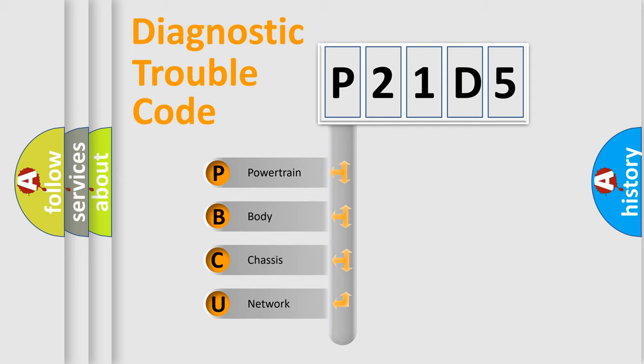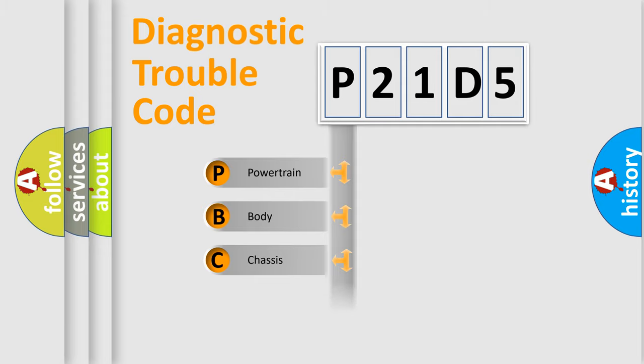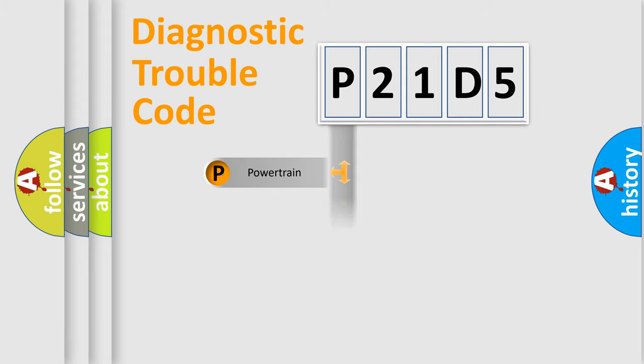We divide the electric system of an automobile into four basic units: Powertrain, Body, Chassis, and Network.